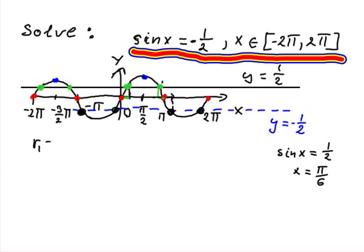So the first root, root number 1, will be π plus π over 6. So 6 over 6 plus π over 6 equals 7 over 6 π. There you go.